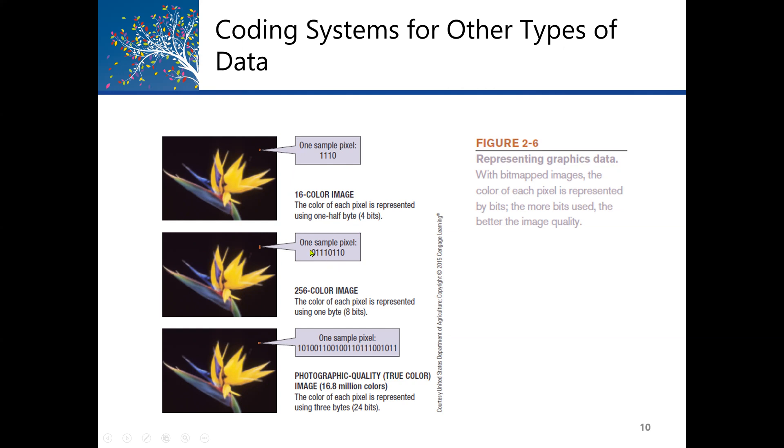The next one, we have one sample pixel, but this time it's 0, 0, 0, 1, 1, 0, which is eight bits. This represents a 256-color image, which is more colorful. Then the next one, we have more bits. This represents 16.8 million colors.